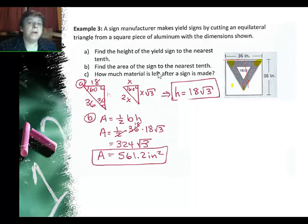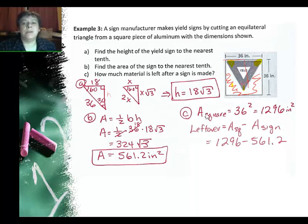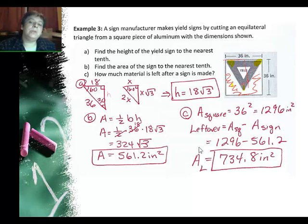Now, for part C, they want to know how much material is left, so they're looking for this part right here, this white area. And what I can do is take the area of the square and subtract the area of the triangle. The area of the square is going to be 36 times 36, or 36 squared, which is 1296. Then subtracting the area of the triangle from here, I get 1296 minus 561.2, or 734.8 inches squared.